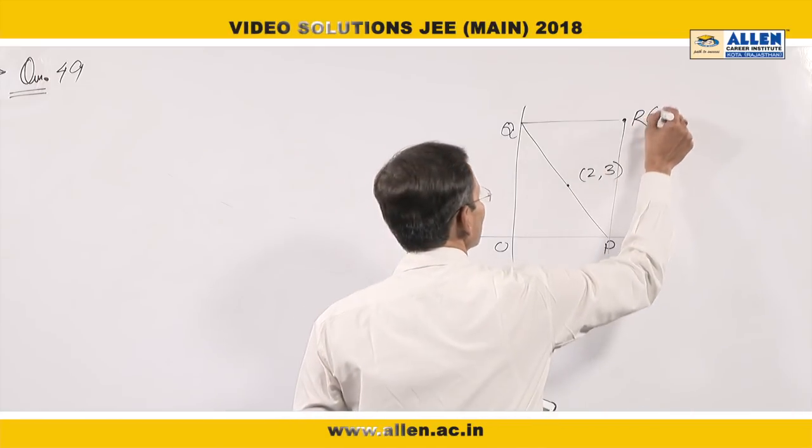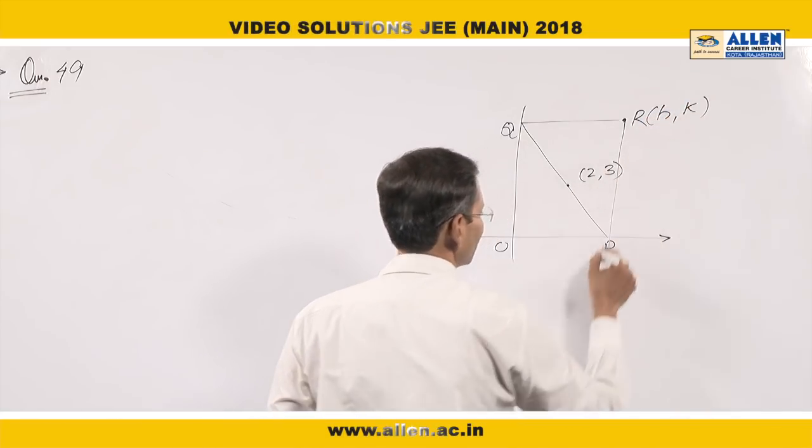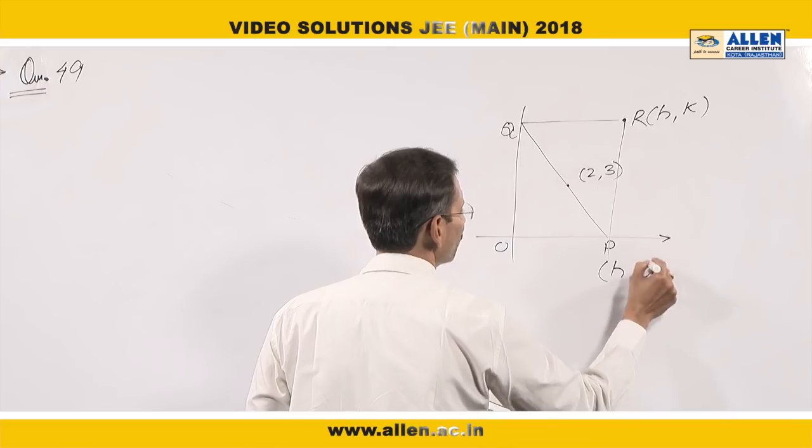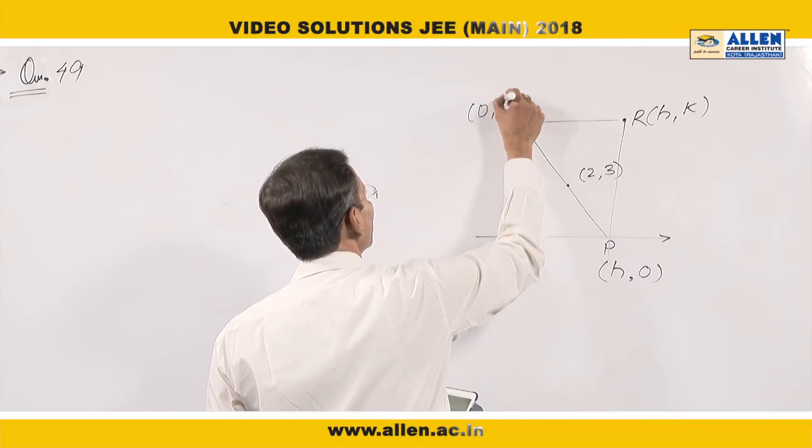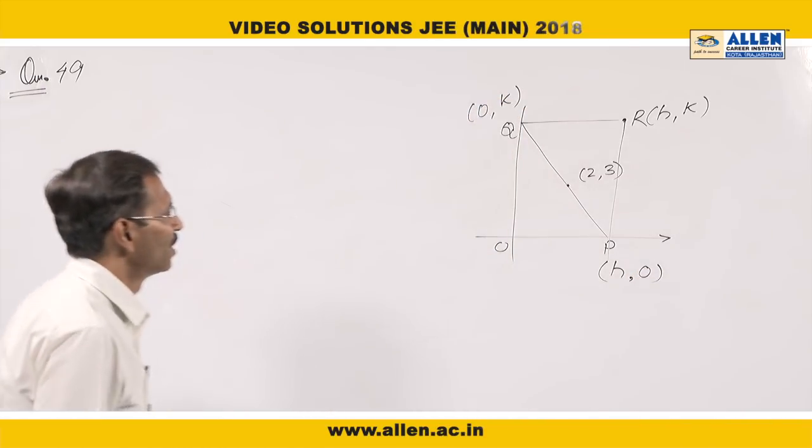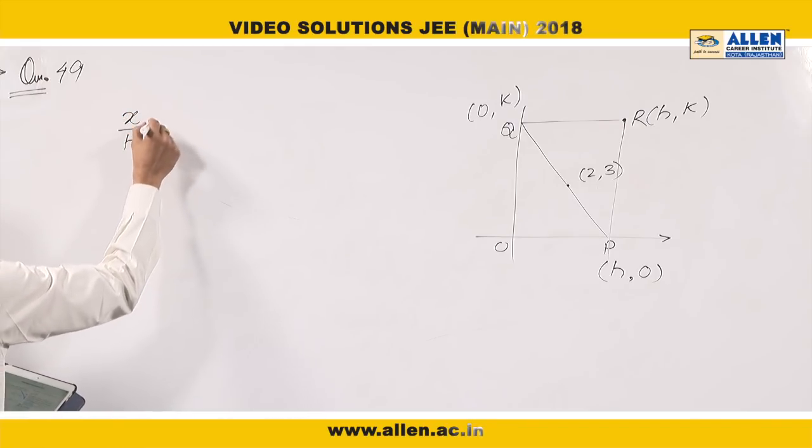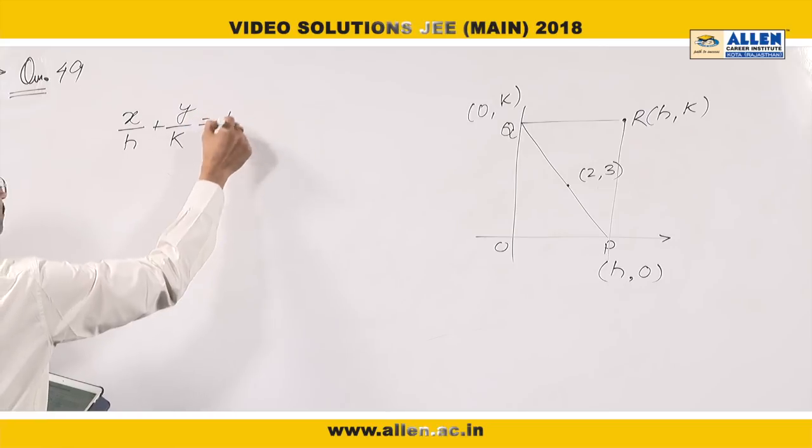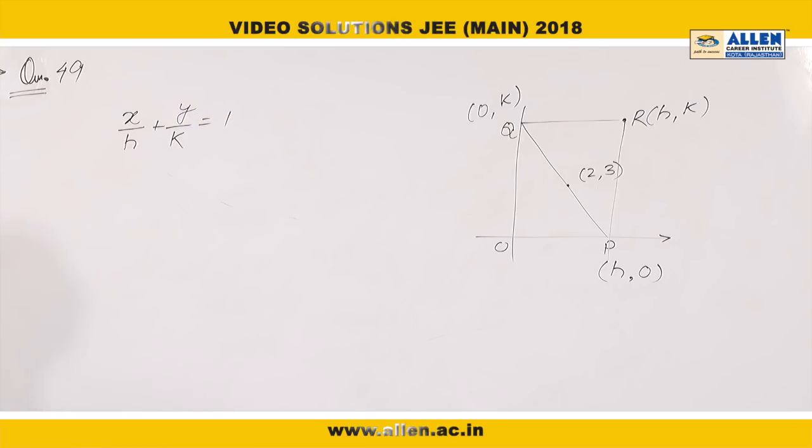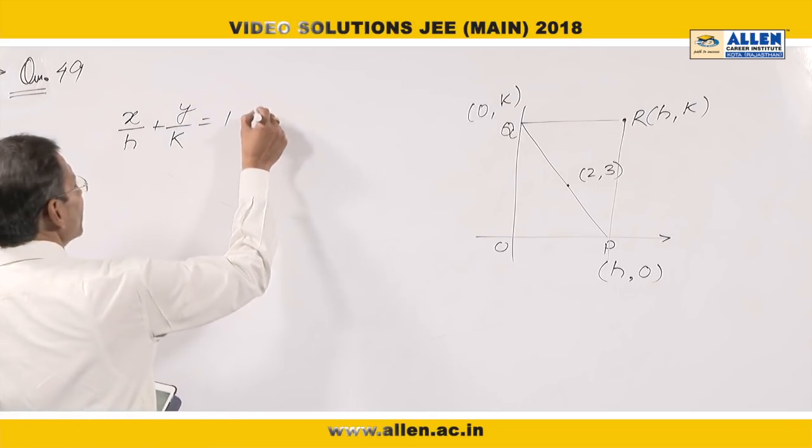Let us consider R as H comma K. So the coordinate of P will be H comma 0 and Q will be 0 comma K. If I write the equation of line PQ in intercept form, it will be X by H plus Y by K equals to 1. As the line is passing through 2 comma 3, it will satisfy the point.